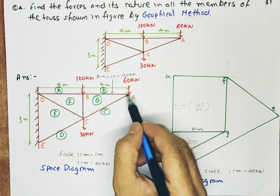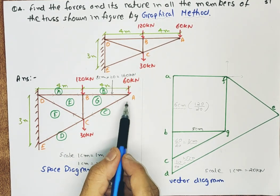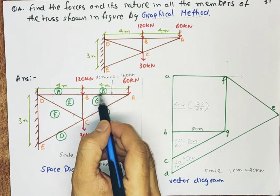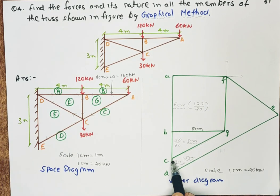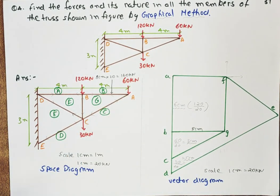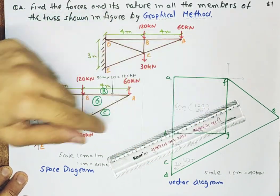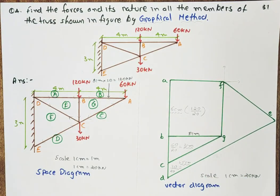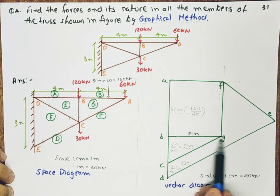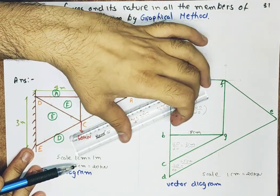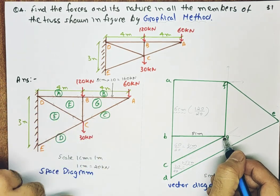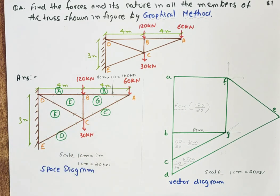Now we will first analyze joint A in the space diagram, because it is the free end joint. Moving clockwise around point A, the first member is C-G and the second member is G-B. In the vector diagram, from point C I am drawing a line parallel to C-G, and on the second side drawing a line parallel to G-B from point B towards infinity. The intersection of these two lines is known as point G.